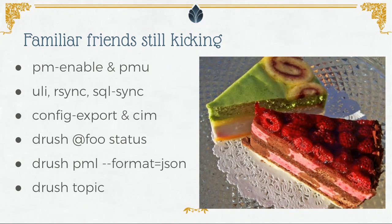drush pml (pm-list) with --format=json is an example of output formatters — Drush has had these since Drush 5 or so, and they still work exactly the same from the command line. There's also a plug for the drush topic command, which has lots of documentation about how you do things in Drush. Just run topic — you'll see about 20 different topics. Read one a night and it only takes 20 nights.